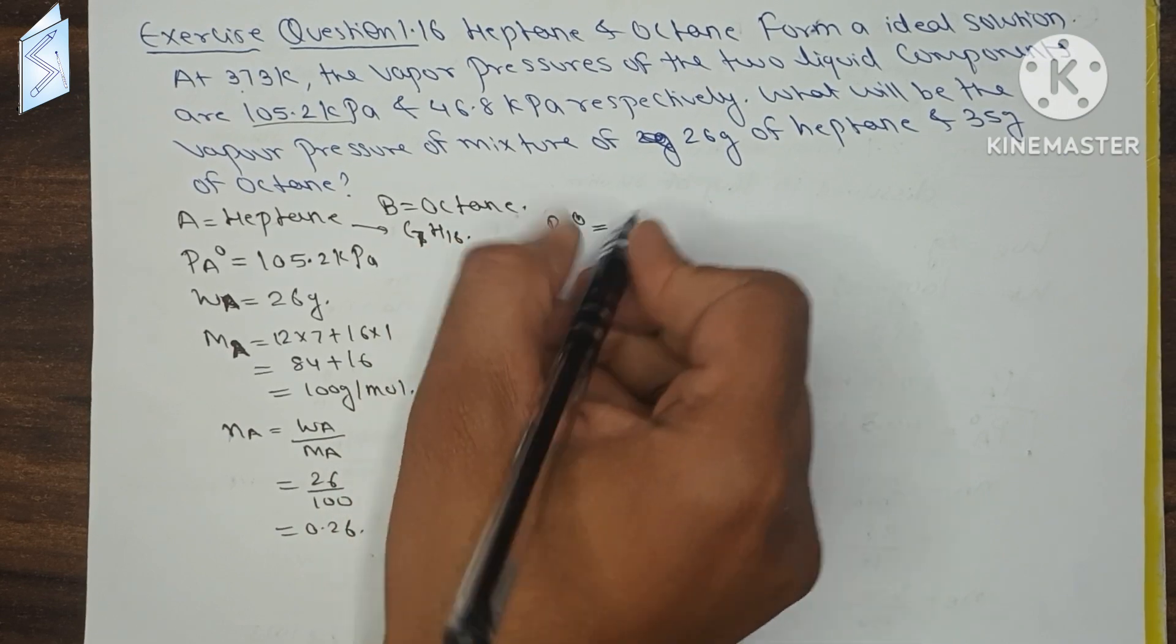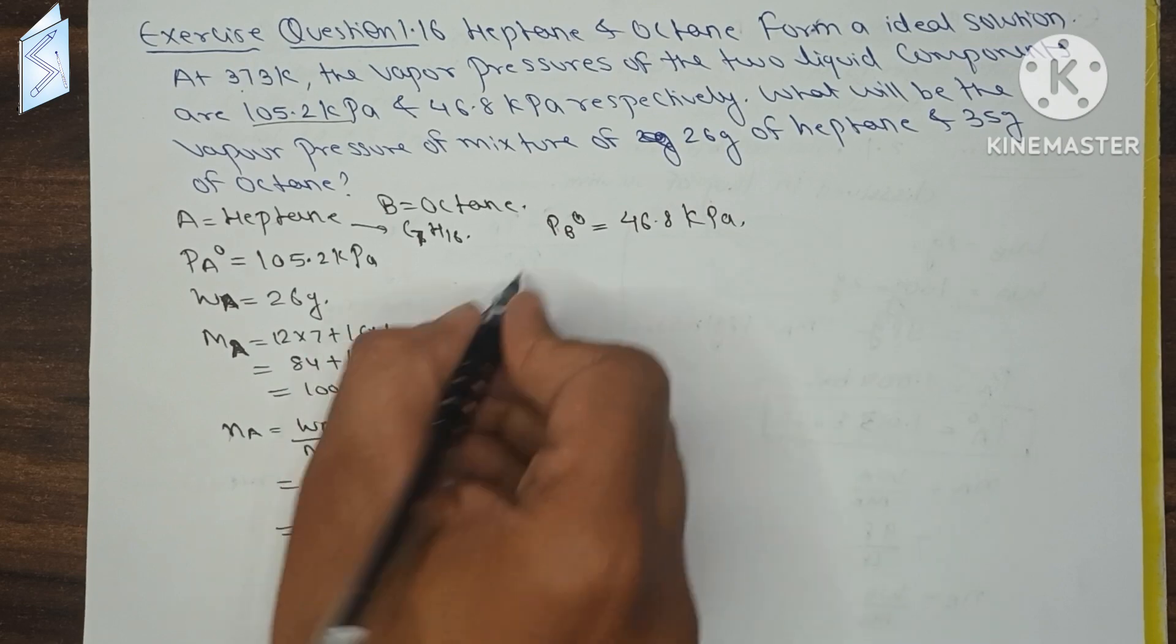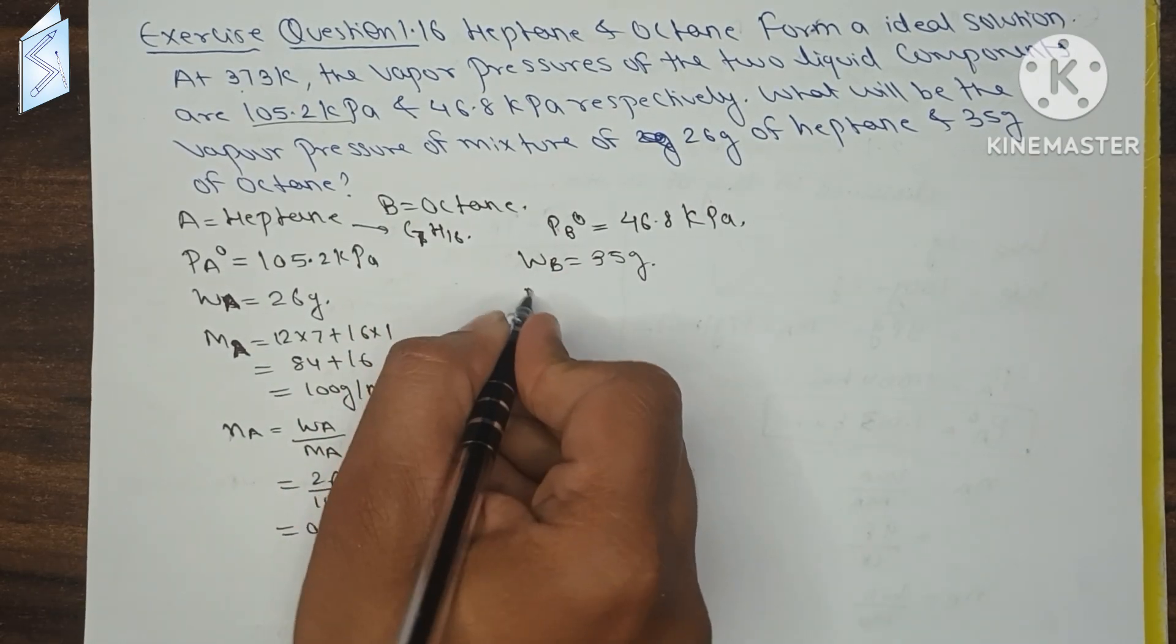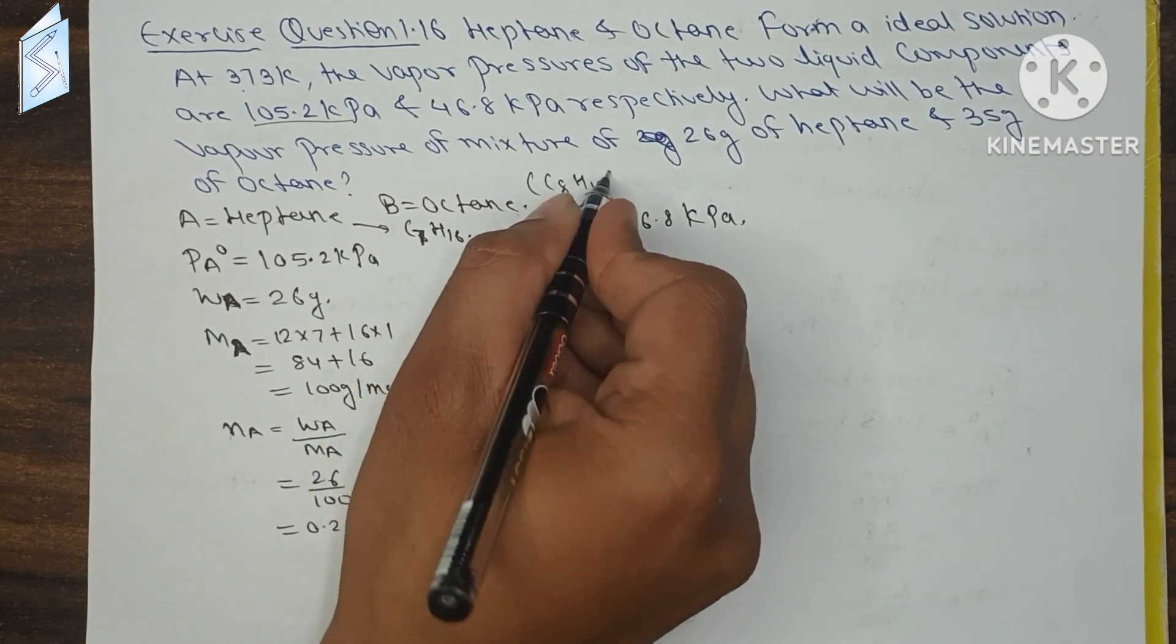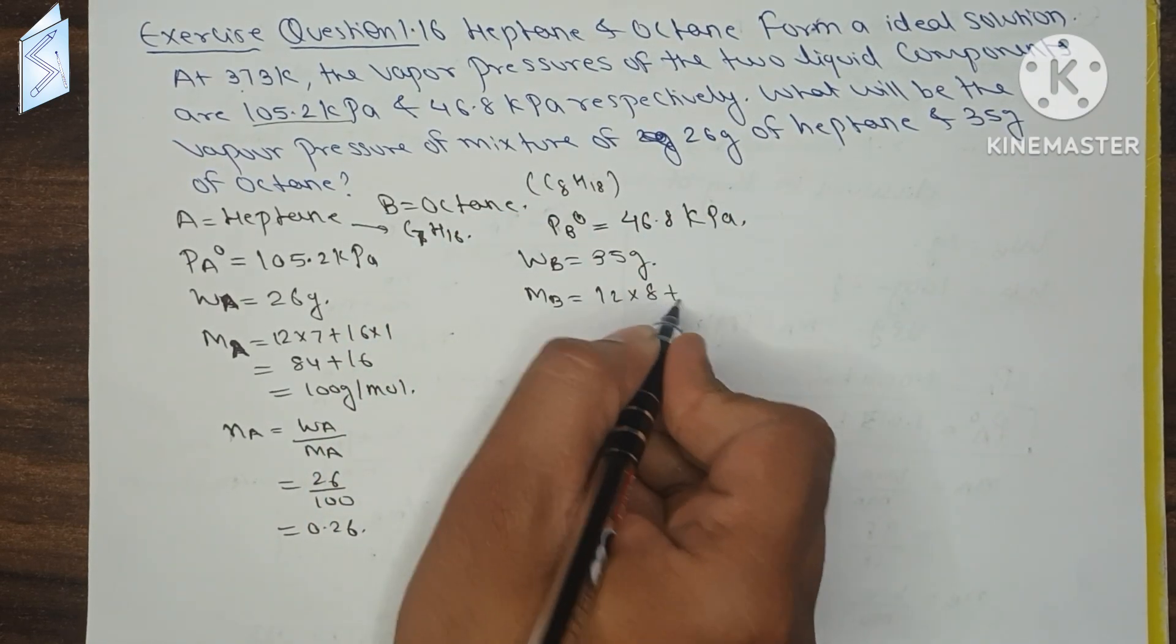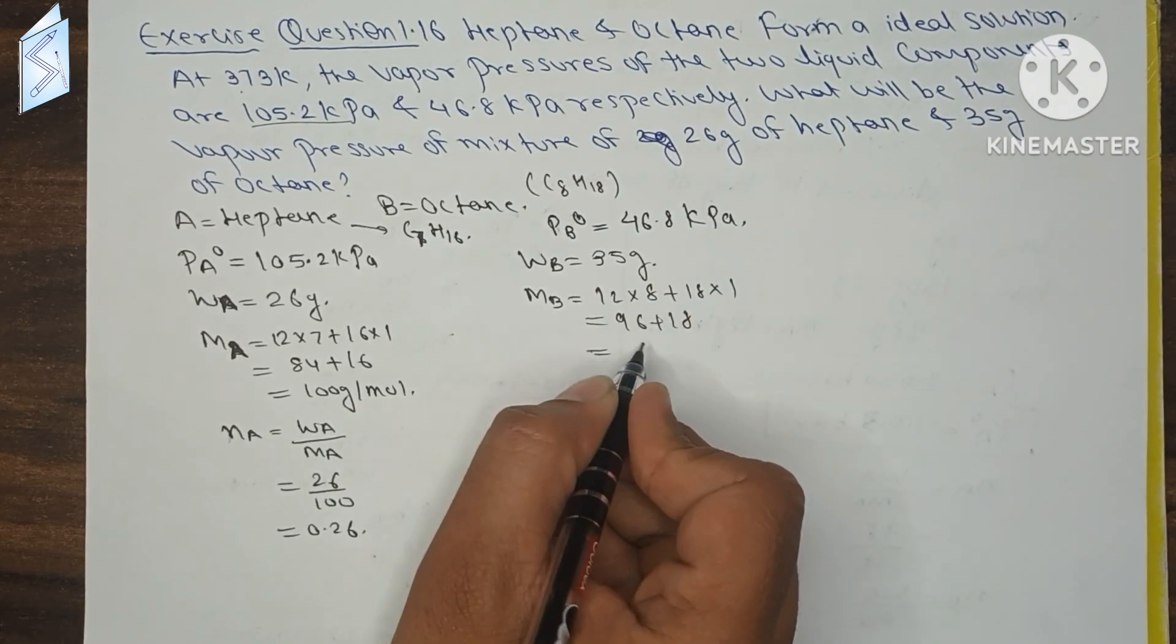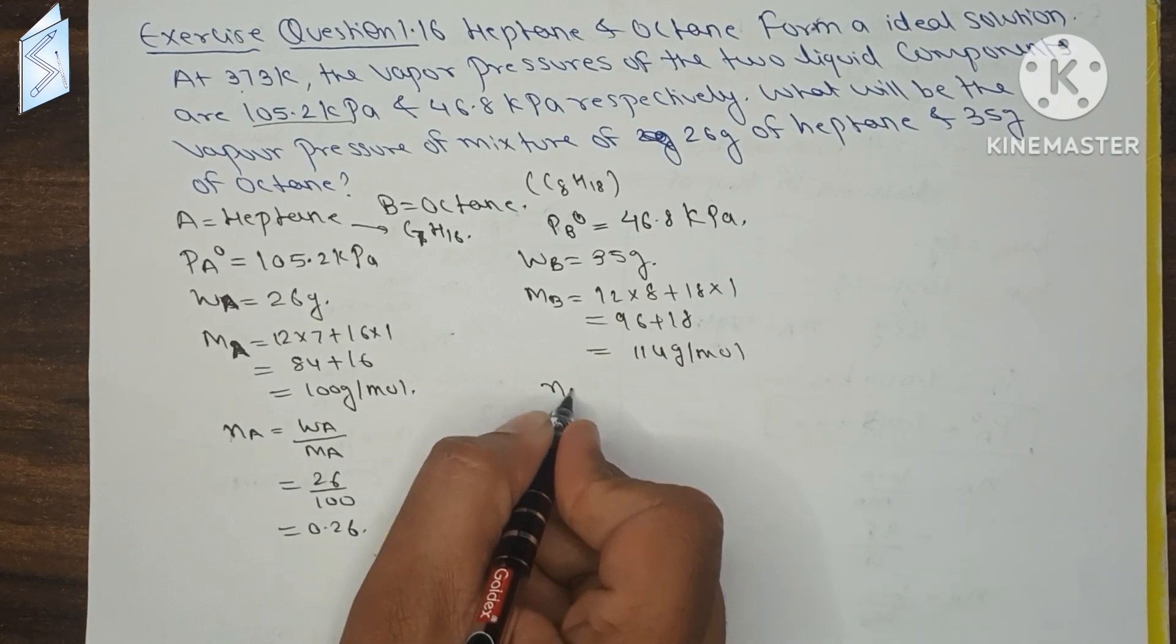For octane B, PB0 is given as 46.8 kilopascal. WB is given as 35 g. MB will be octane C8H18, 12 times 8 plus 18 times 1, equals 96 plus 18, which is 114 g per mol.